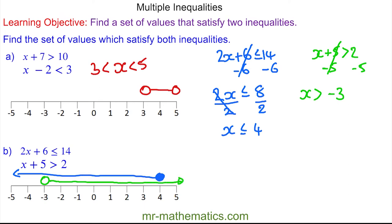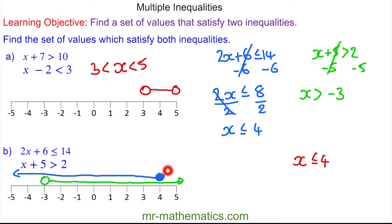You can see our inequalities overlap between negative 3 and positive 4, so our solution is x is less than or equal to 4 and x is greater than negative 3.